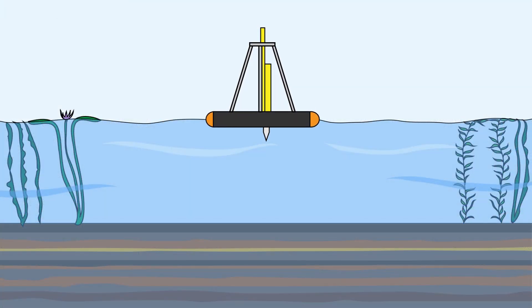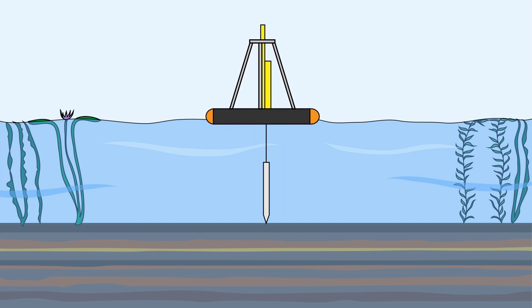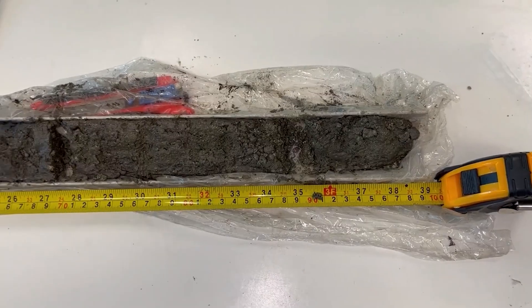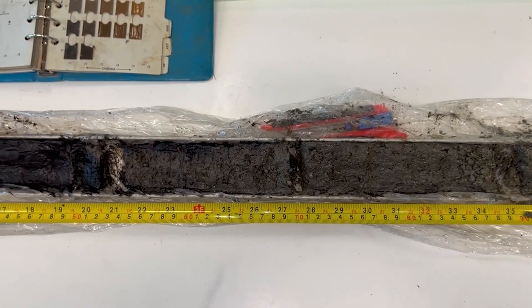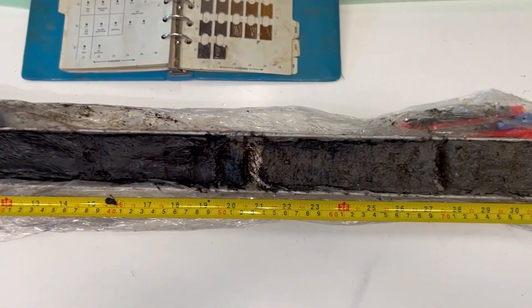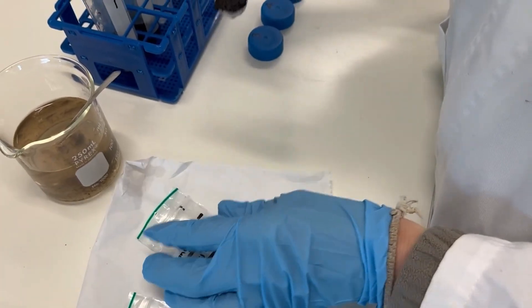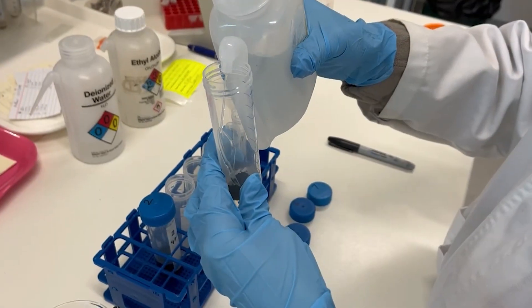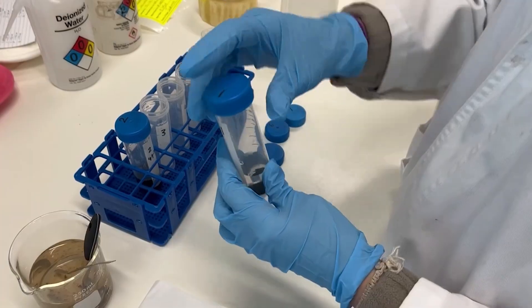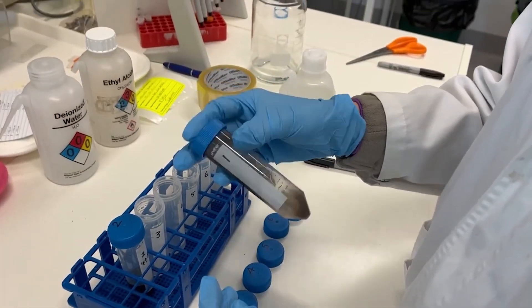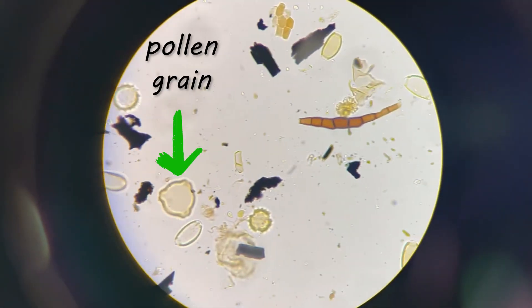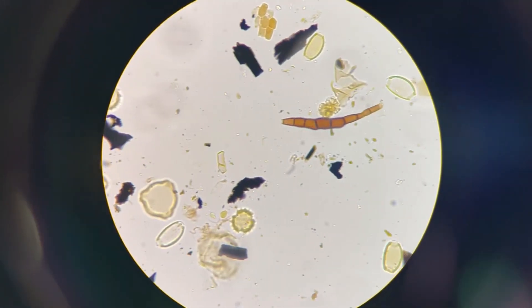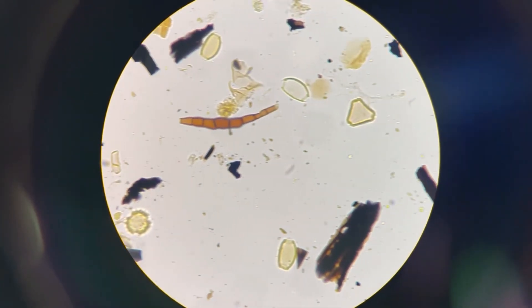Scientists drill cores through the mud at the bottom of these water bodies to look at the pollen and charcoal in the different layers. Sediment cores have many different layers, and each layer is formed at a different time in the past. This microscopic evidence is small but mighty. By looking at the pollen grains and charcoal in different layers, scientists can reconstruct how vegetation communities changed over time and measure the frequency and intensity of fires in the past.